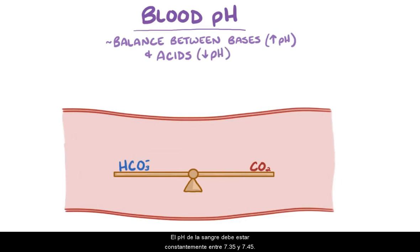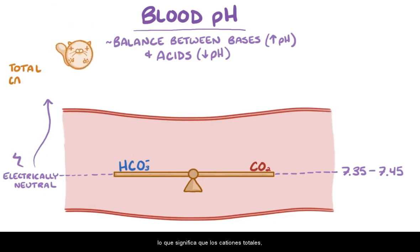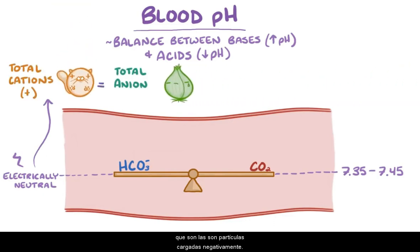The blood pH needs to be constantly between 7.35 and 7.45. Additionally, the blood needs to remain electrically neutral, which means that the total cations, or positively charged particles, equals the total anions, or negatively charged particles.